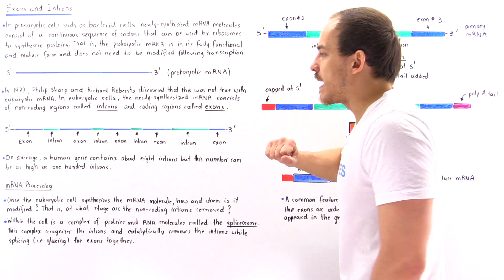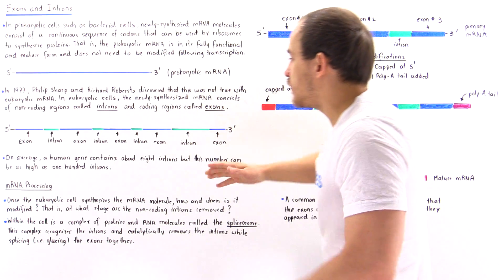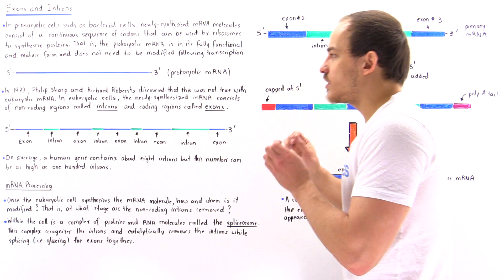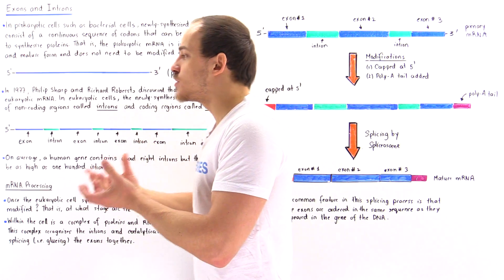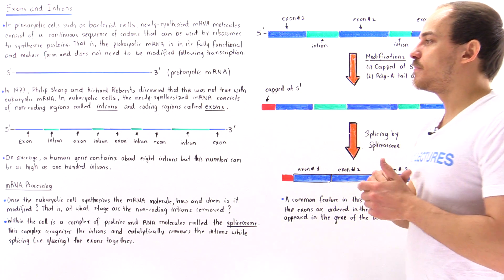And we have one, two, three, four, five of these exons that contain the codons that will be used by the ribosomes to basically synthesize our polypeptide.